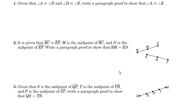So number two, it is given that BC, the segment here, is congruent to EF. M is the midpoint of BC, and N is the midpoint of EF. Write a paragraph proof to show that BM equals EN. Okay, so let's listen to this paragraph.